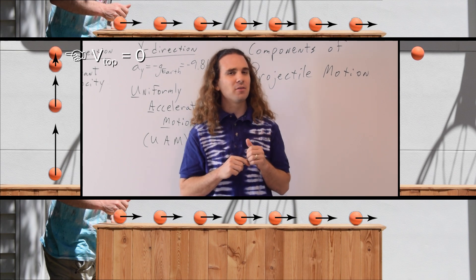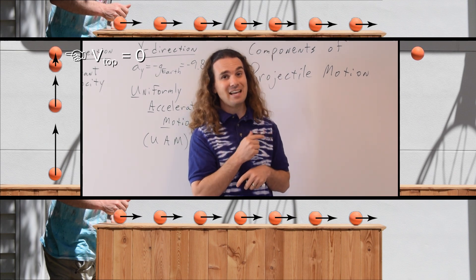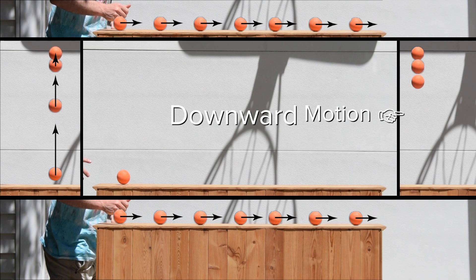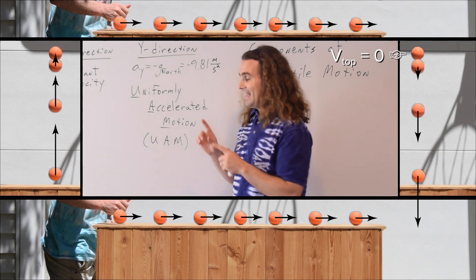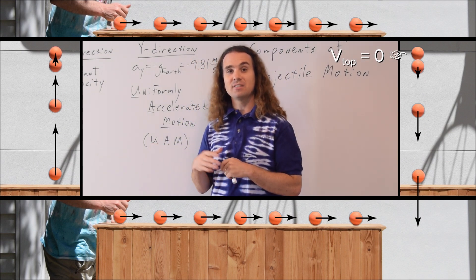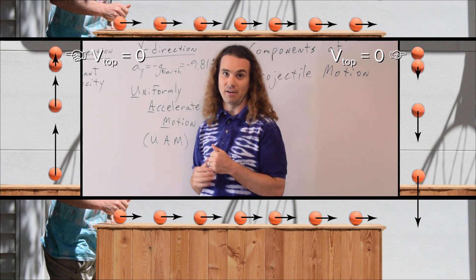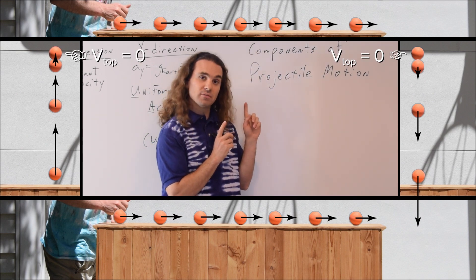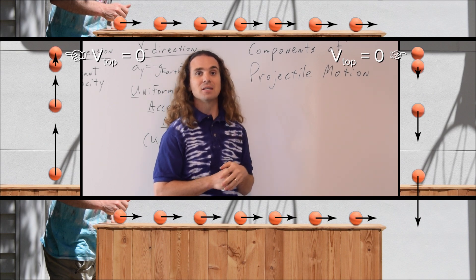Correct. And Bo, what about the velocity vectors of the ball in the y direction as the ball is going downward? As Billy pointed out, at the very top in the y direction, the ball has a velocity of zero. So the ball will have an initial velocity of zero and accelerate downward, and the velocity will have an increasing downward magnitude as the ball goes down. So again, in the y direction as the ball moves upward, that velocity will be upward and decrease in magnitude until it reaches zero at the very top. As the ball moves down, that velocity will start out at zero and increase in magnitude and always be downward.